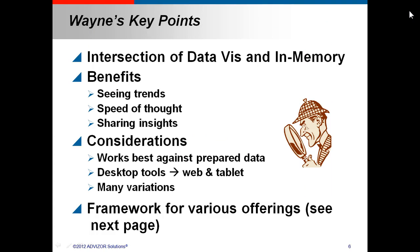So Wayne laid out a great framework for looking at this. And just to summarize, at the beginning he talked about the intersection of data visualization and in-memory data storage. The two go together because the in-memory gives the kind of speed of thought capability to querying and slicing the data that the visualization then needs to show. He talked about three benefits. Seeing trends in data, speed of thought analysis, sharing insights. We'll talk about that over the next few minutes.